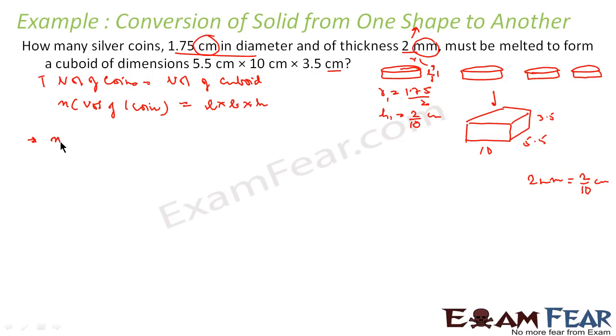So let us solve this. n into r1 square h1 will be equal to volume of cuboid l into b into h. So n into pi, pi is 22 by 7, r1 is 1.75 by 2 square into h1 that is 2 by 10. This is equal to l into b into h, that is 5.5 into 10 into 3.5. From this, if I solve this, solving n is not that difficult for me.